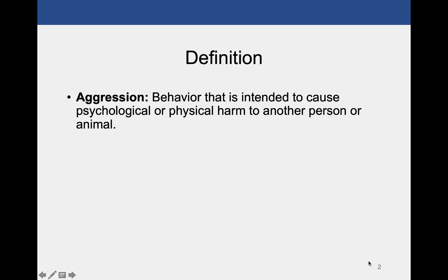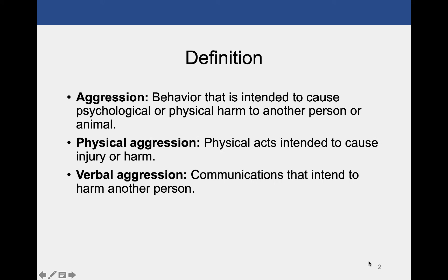Before we get started, we need some definitions. In terms of defining aggression, we define it as a behavior that is intended to cause psychological or physical harm to another person or an animal. We distinguish it as either physical or verbal. Physical is an act that causes pain, injury, or physical harm, whereas verbal is a communication of intended harm to another person. You can also call emotional harm verbal aggression. The key to these types of aggression is definitely intent.